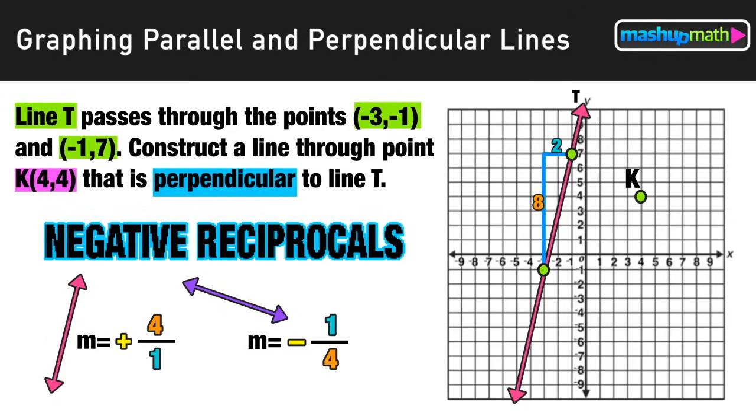Plotting a new point and then connecting those two points and drawing a line through them. That line will be perpendicular to line t and passes through point k.